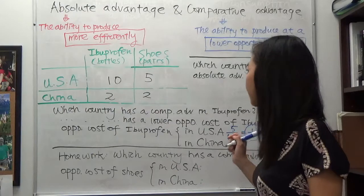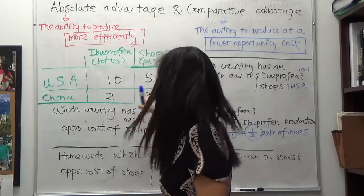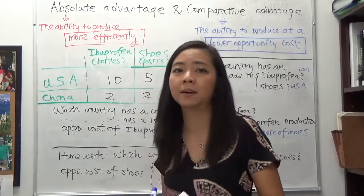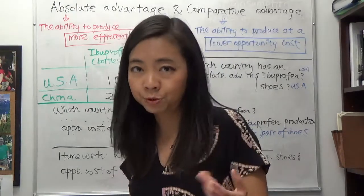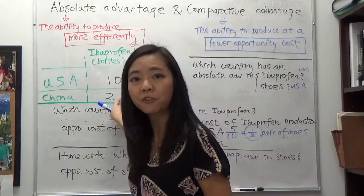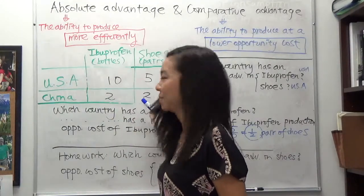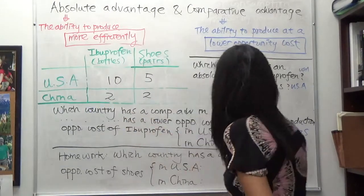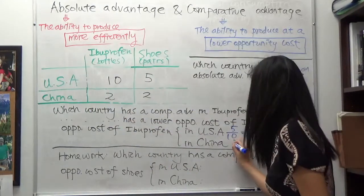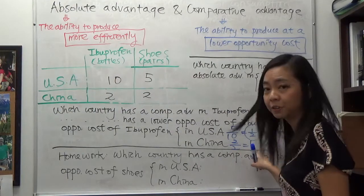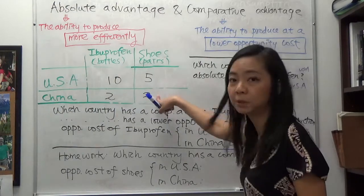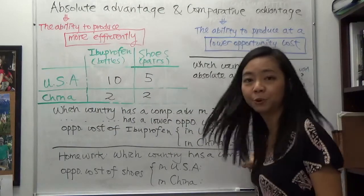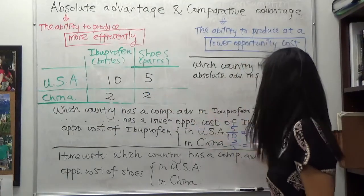What about China? It's the same — you treat the other good as currency. Suppose you're in China and you go to the store to buy a bottle of ibuprofen, and they tell you the cost of 2 bottles of ibuprofen is $2. So you divide 2 by 2 to get the cost of one bottle of ibuprofen. That gives you 1 — so the opportunity cost of ibuprofen in China is 1 pair of shoes.